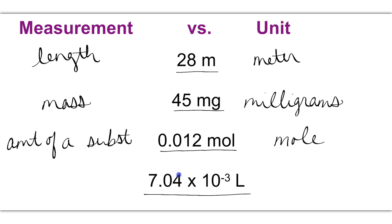The last example, 7.04 times 10 to the negative 3, capital L is a unit called liters, and liters is a unit of measurement for volume. Other units for volume include milliliters, cubic centimeters, and if you're in the English system, quarts or pints.